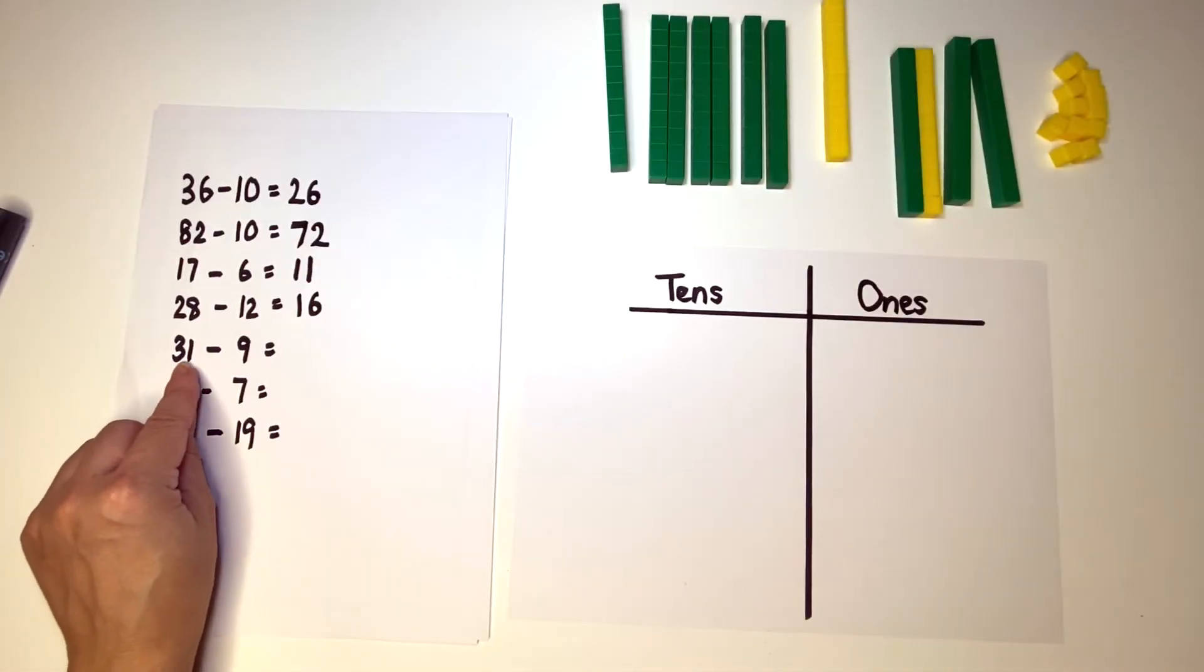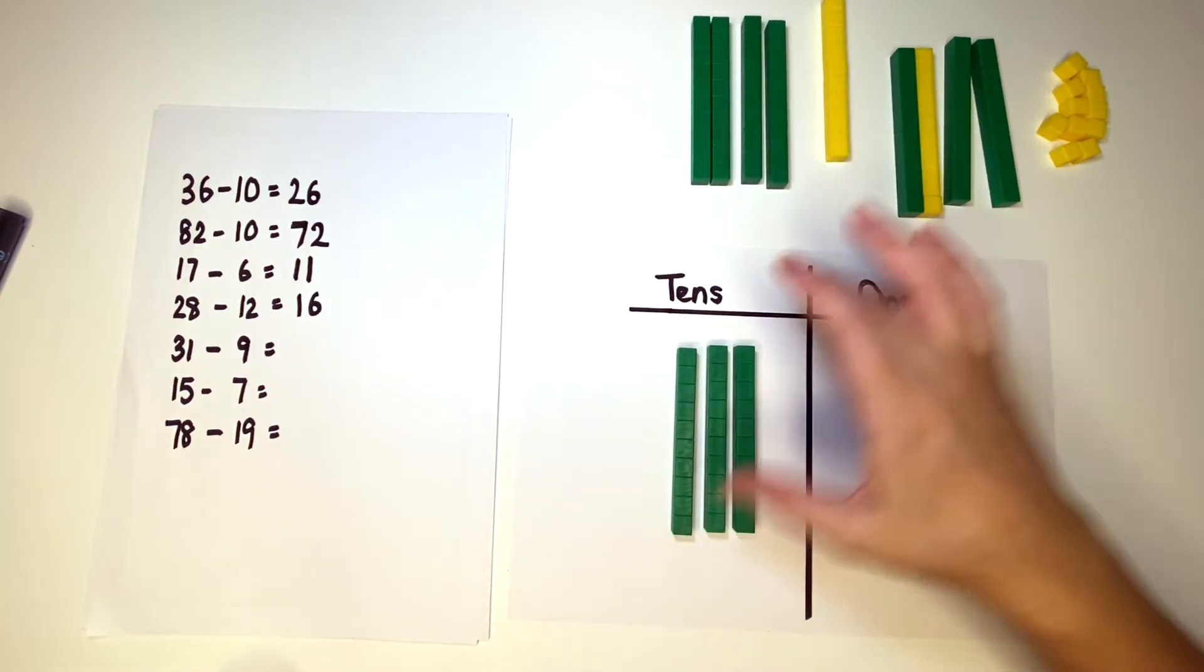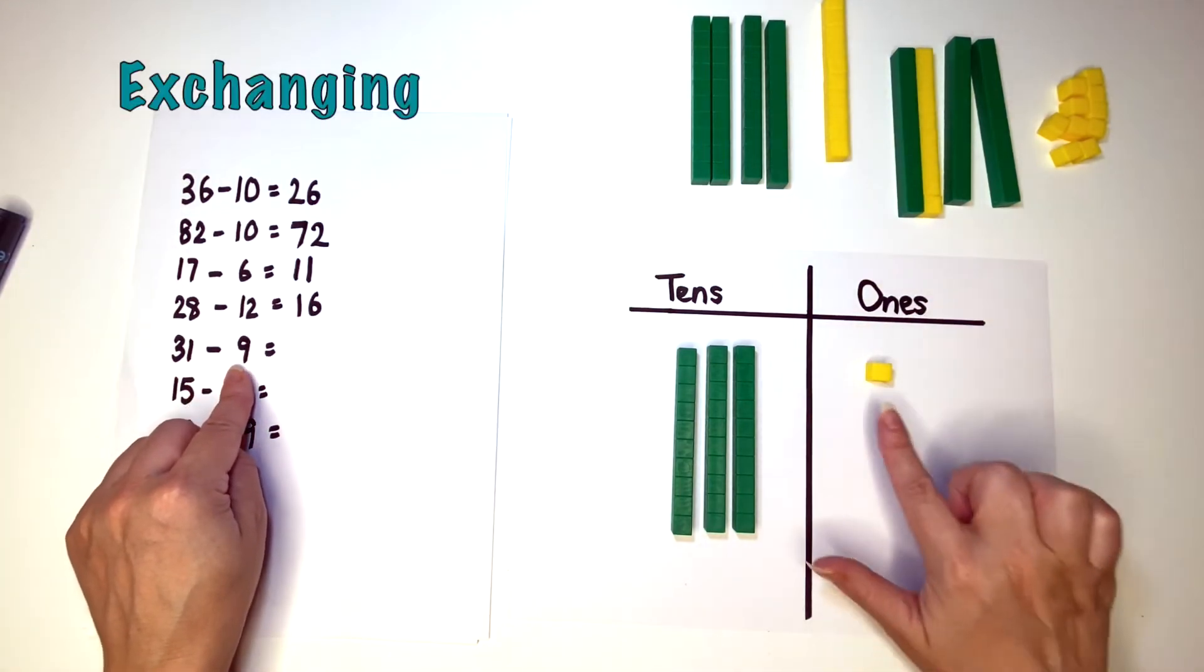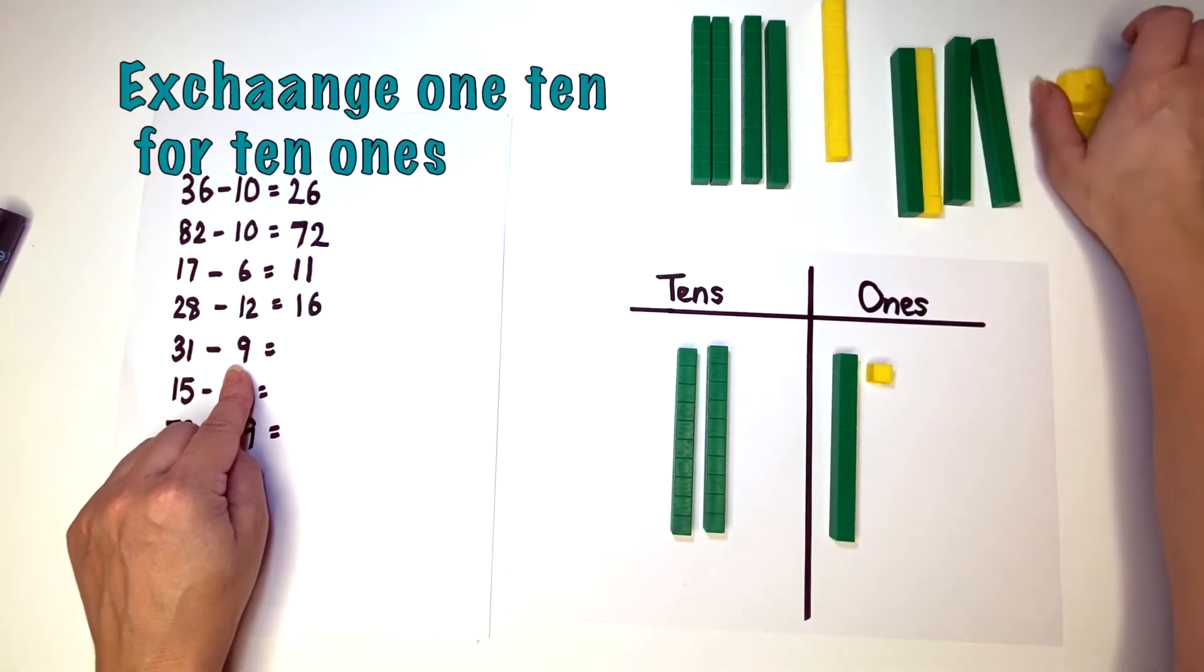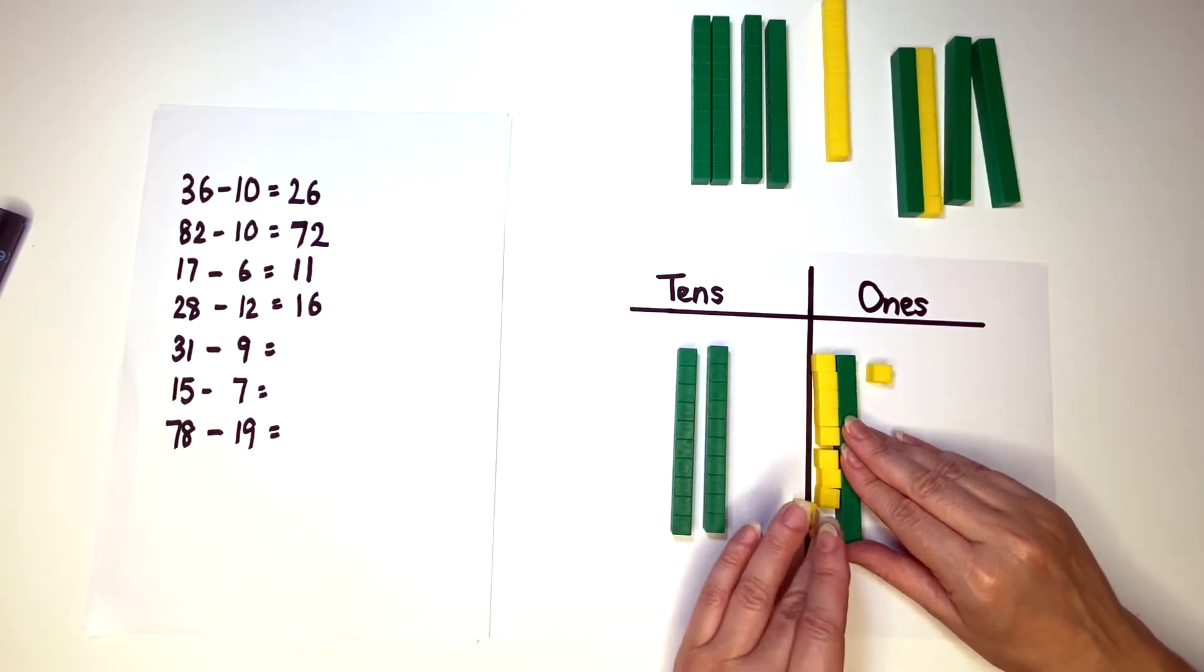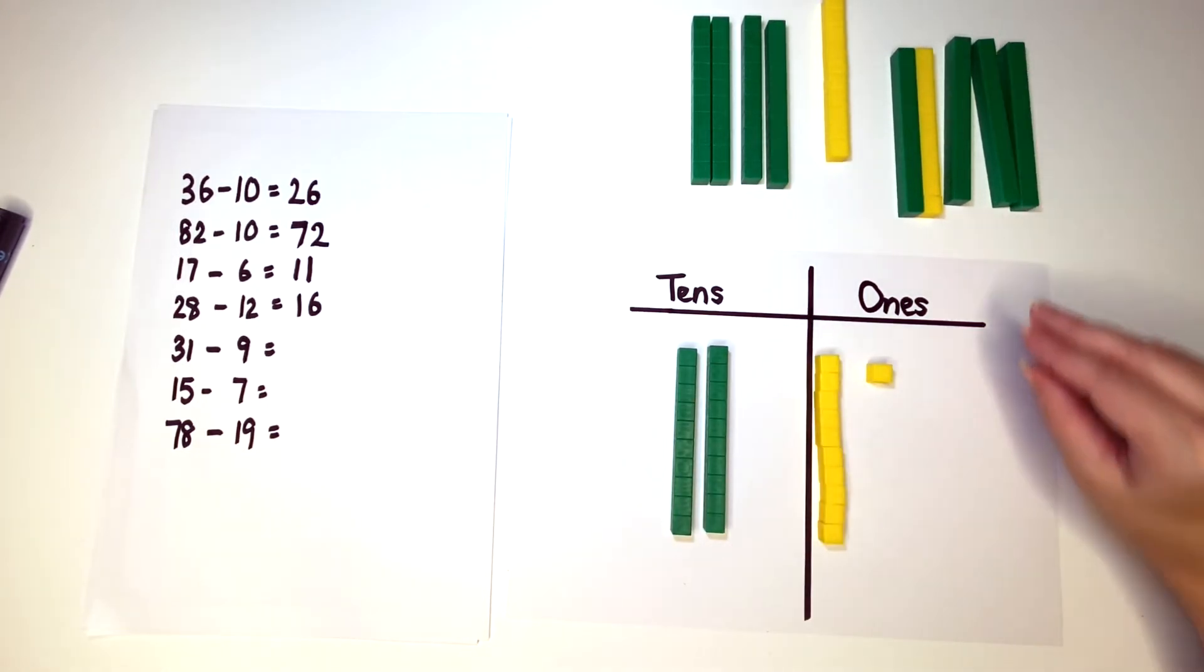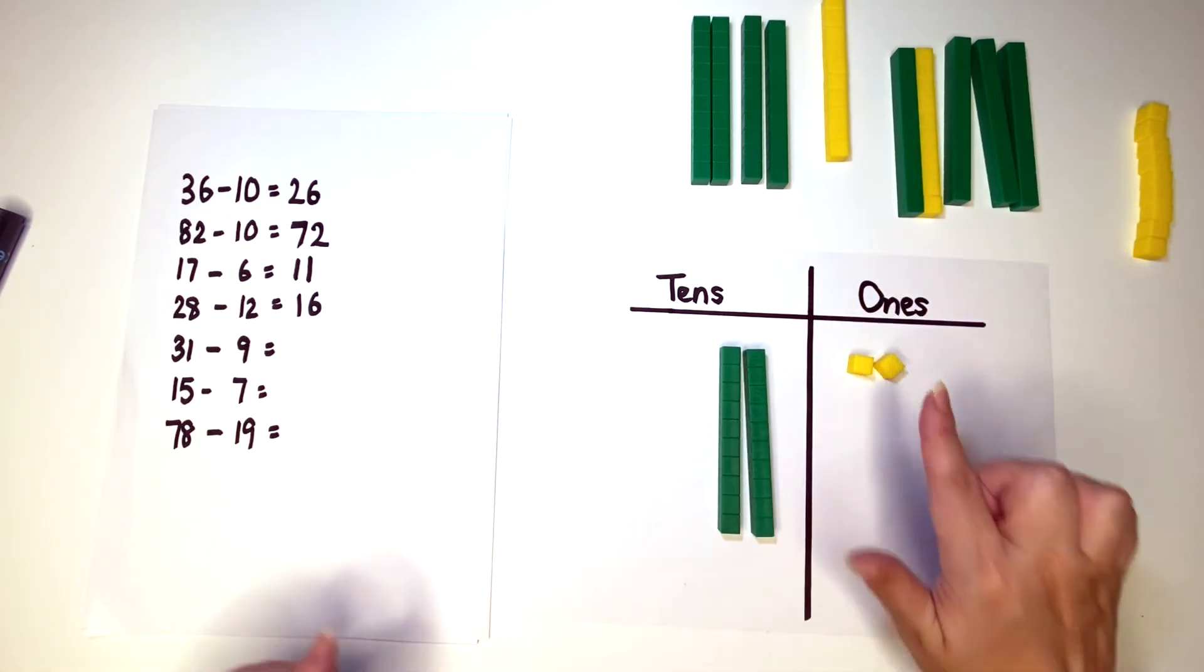Our next number sentence is 31 minus nine. This is the first one where we have to do some exchanging. We don't have enough ones to take nine away. So what we need to do is take a ten from the tens column. I'm going to exchange it for ones. Put them in my ones column to make it easier. And I'm going to take nine away. And my answer is twenty. Two tens and two ones, twenty-two.